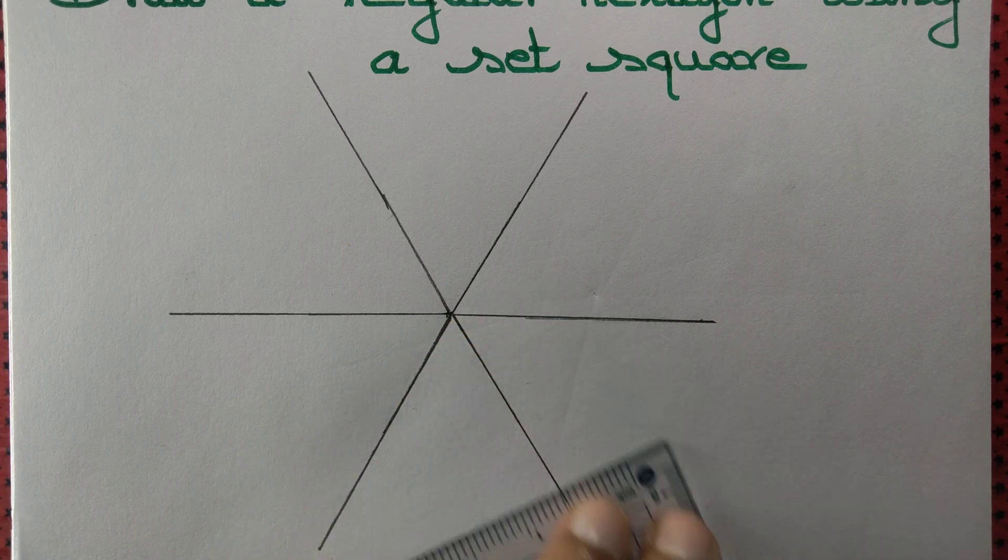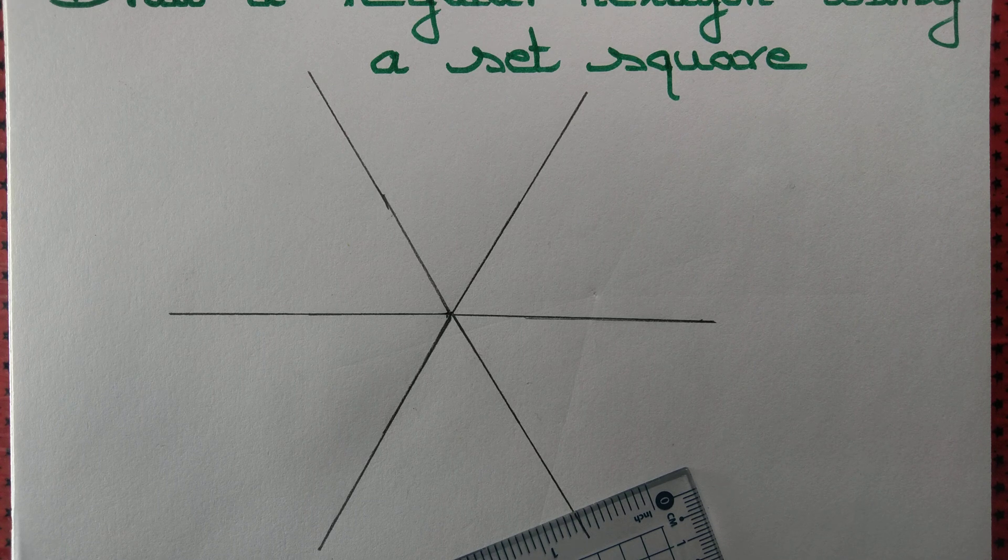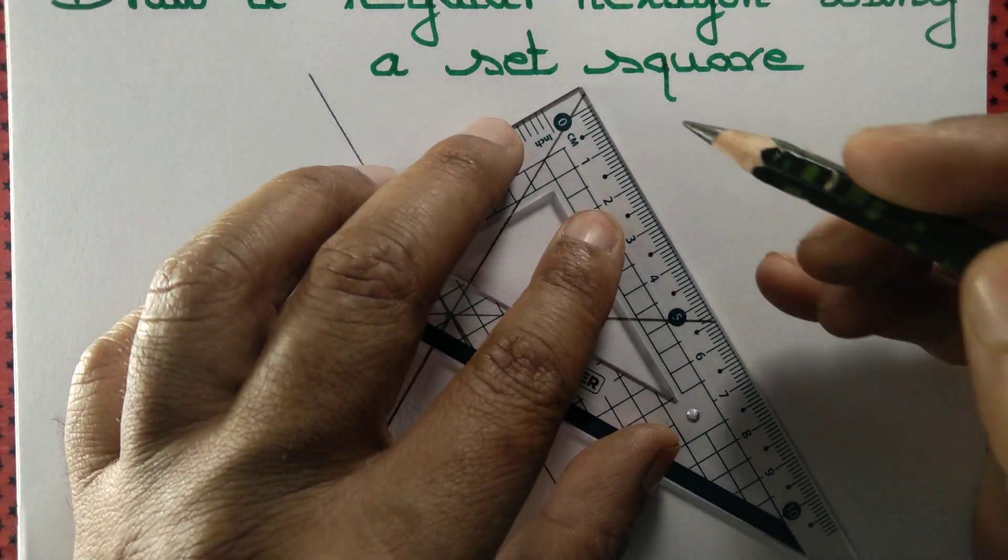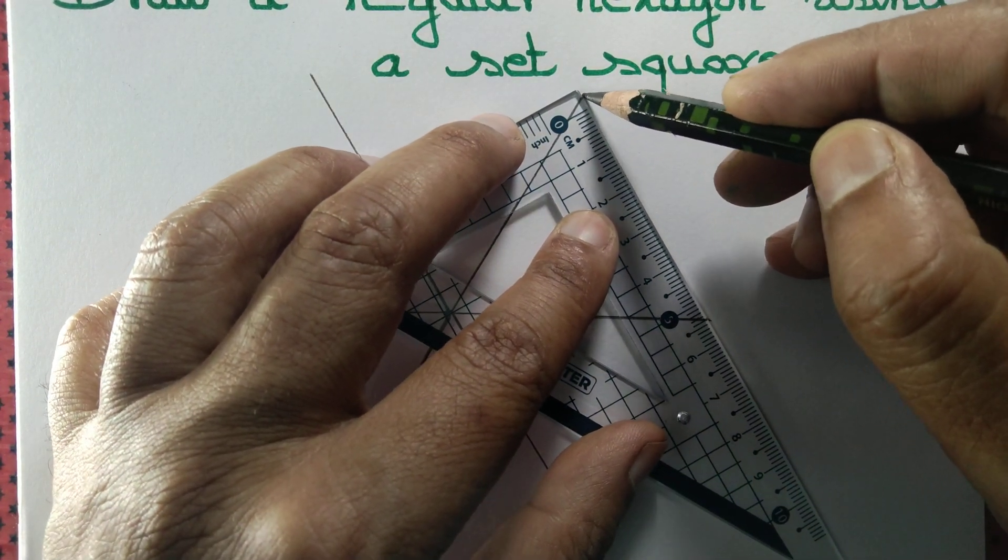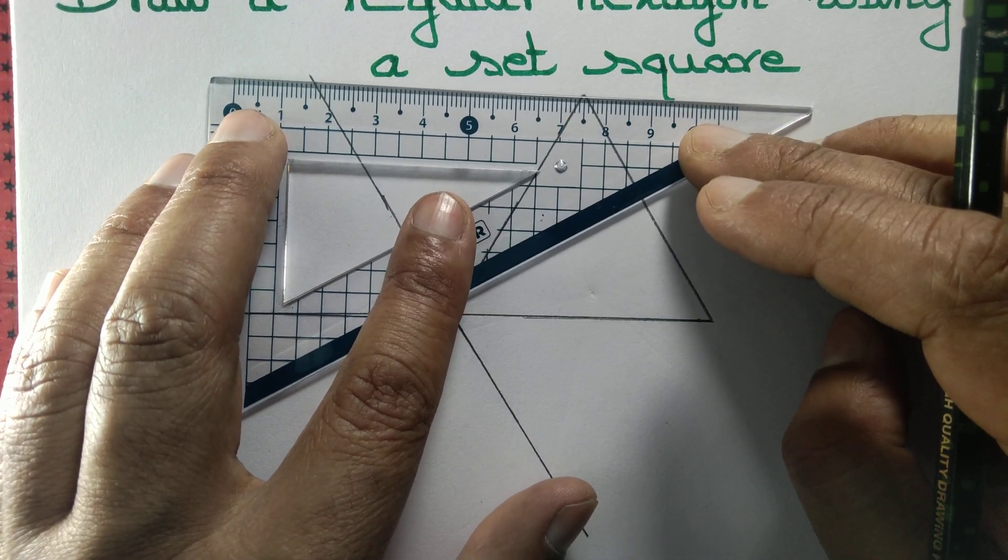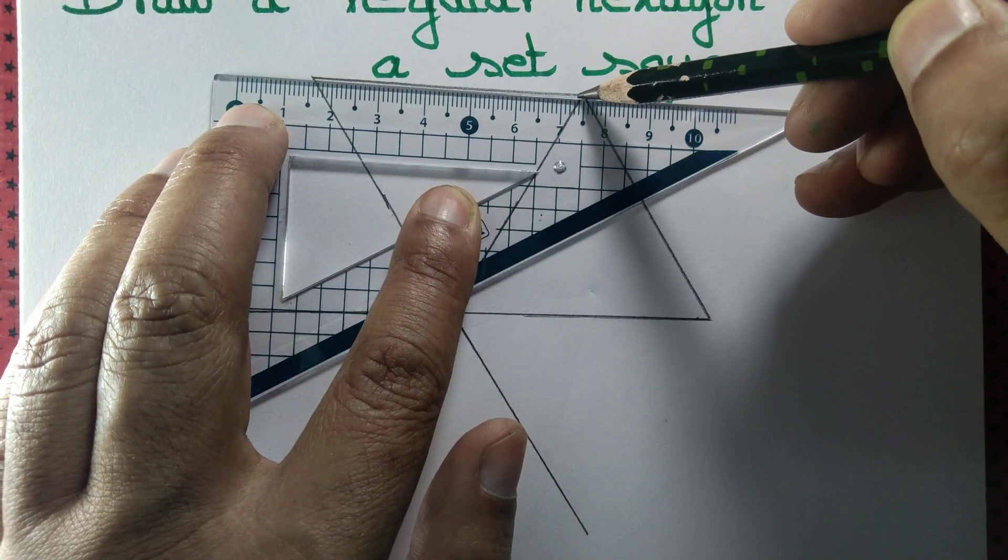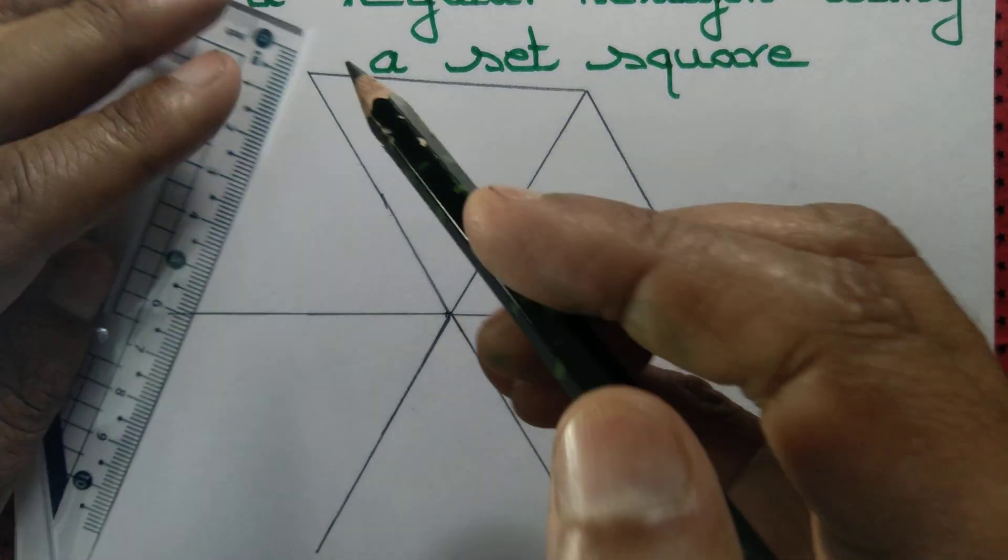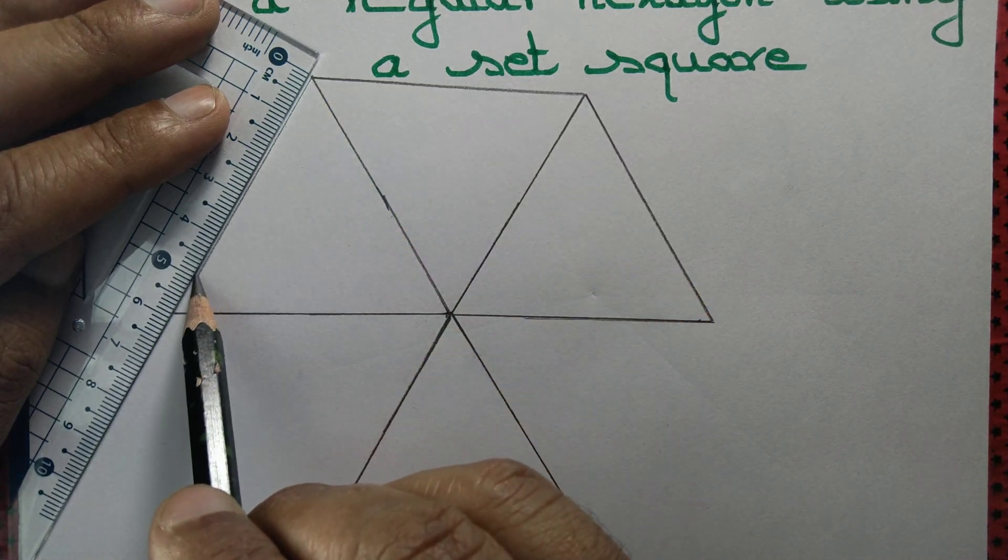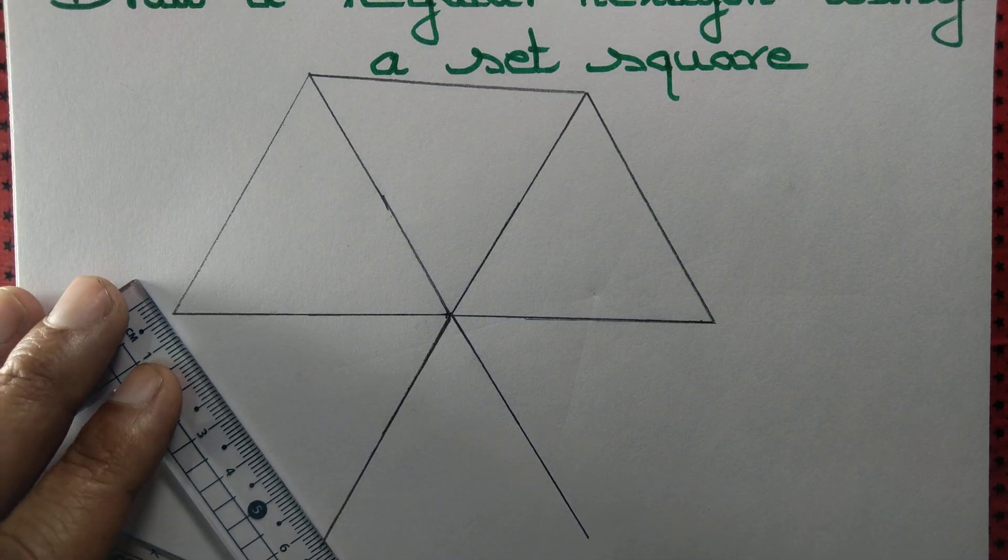We observed that we have not just drawn angles, but we have also made sure that the arms of the angles measure the same in length. Let us join the endpoints of the arms. We join the 2nd side, 3rd side, and 4th side.